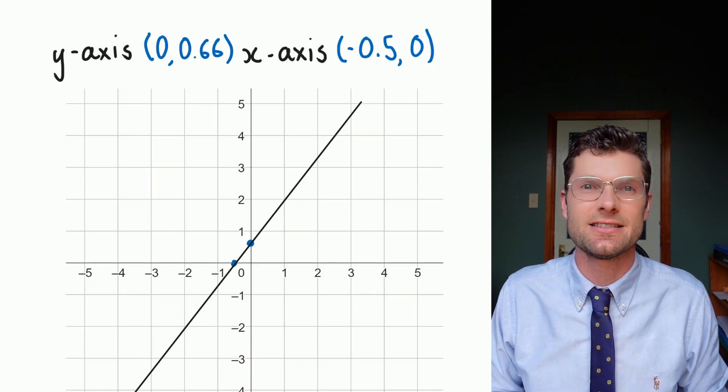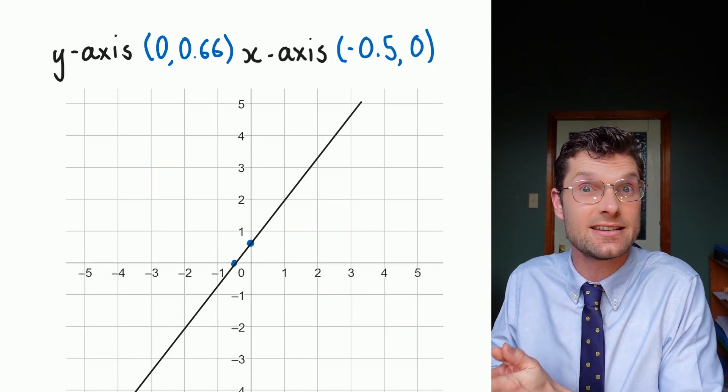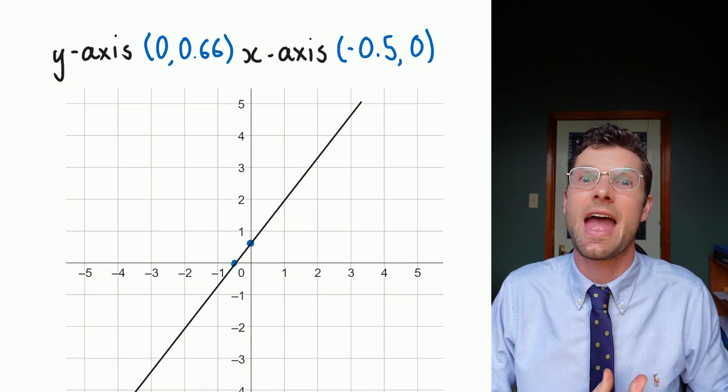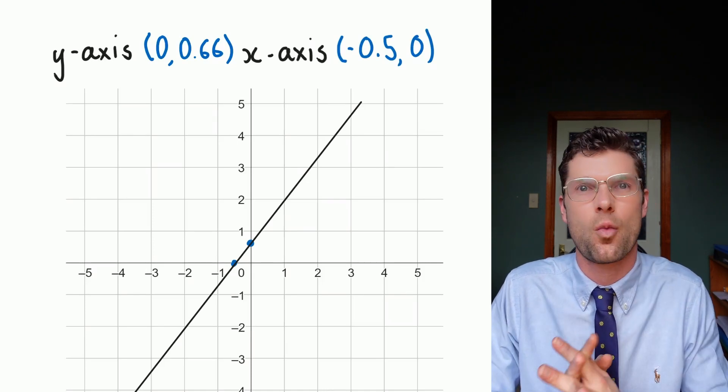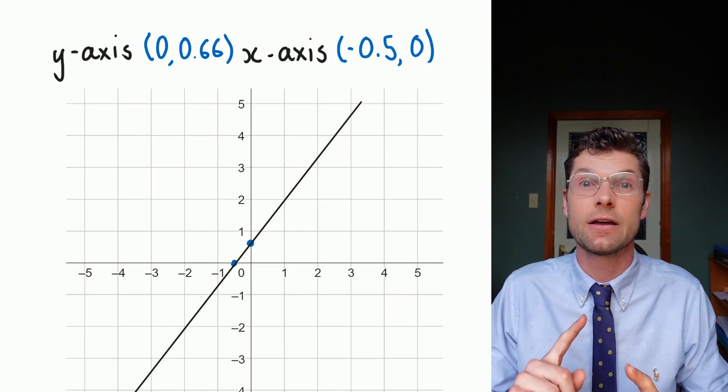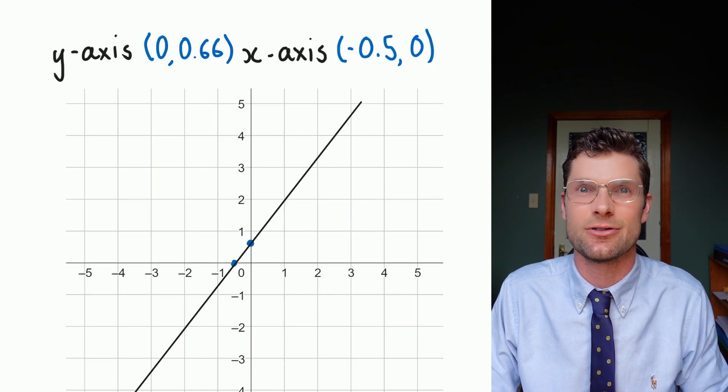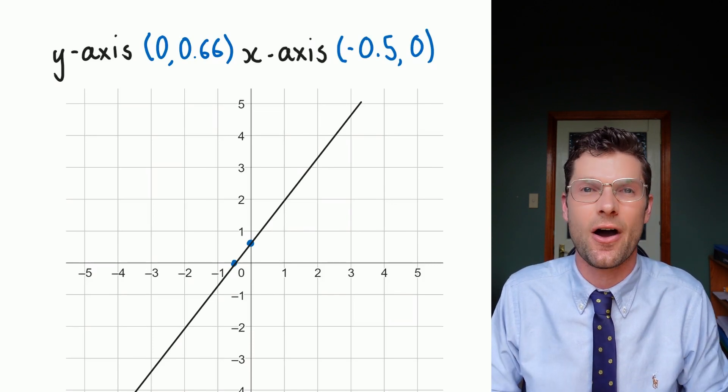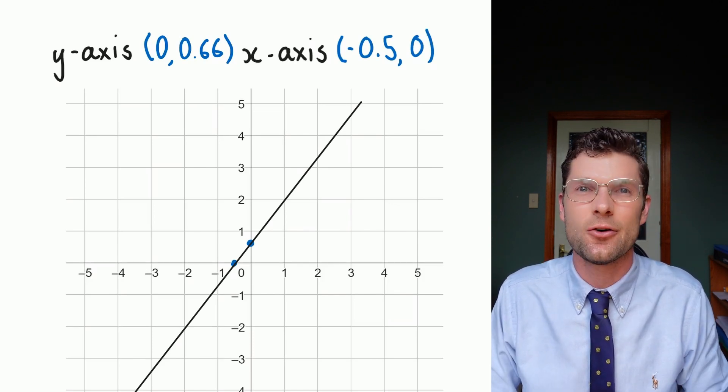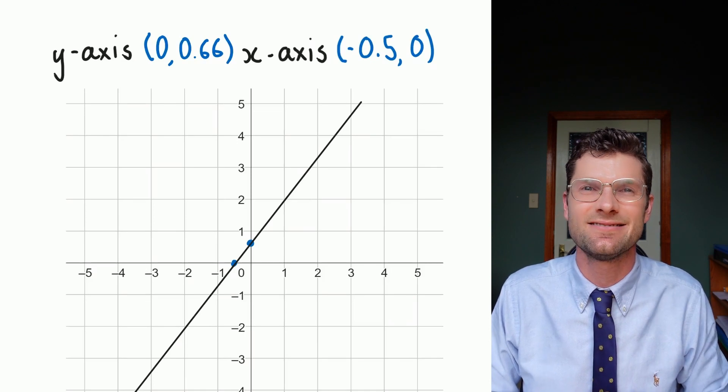So the only thing you really need to remember for this lesson is that if you're trying to find the y-intercept, x is equal to zero, and if you're trying to find the x-intercept, y is equal to zero. So whatever you're looking for, the other thing is equal to zero. Sub it in and find the unknown. That's all for today. I hope you enjoyed this lesson, and I'll see you soon.